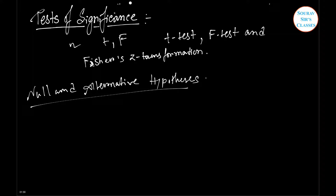Now, null and alternative hypothesis. The technique of randomization used for the selection of sample units makes the test of significance valid. For applying the test of significance, we first set up a hypothesis — a definite statement about the population parameter. Such a hypothesis, which is usually a hypothesis of no difference, is called the null hypothesis, denoted by H₀. According to Professor R.A. Fisher, the null hypothesis is the hypothesis which is tested for possible rejection under the assumption that it is true.